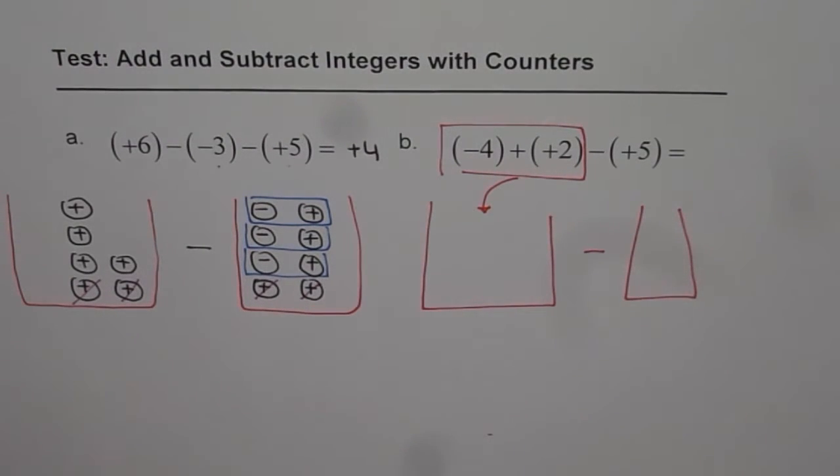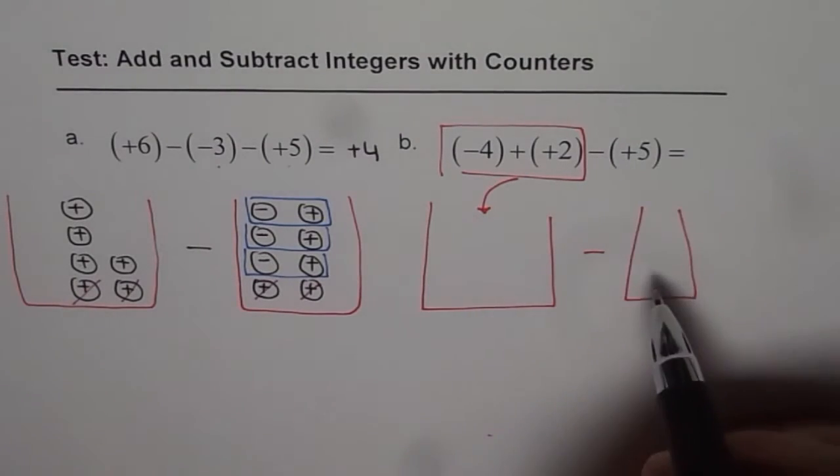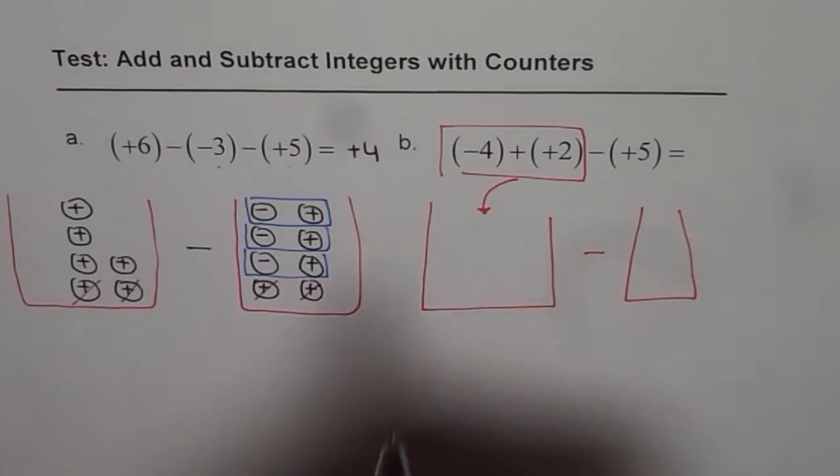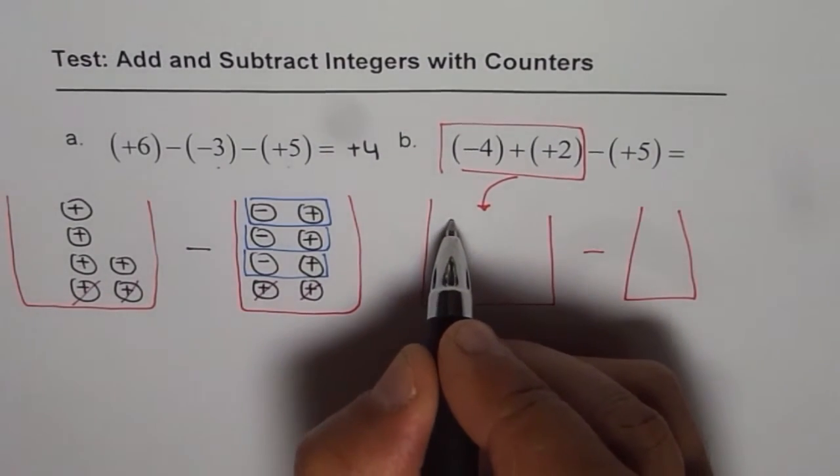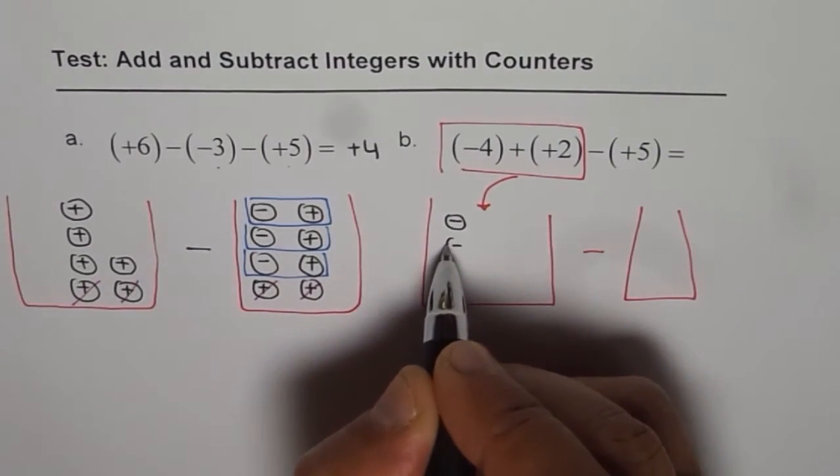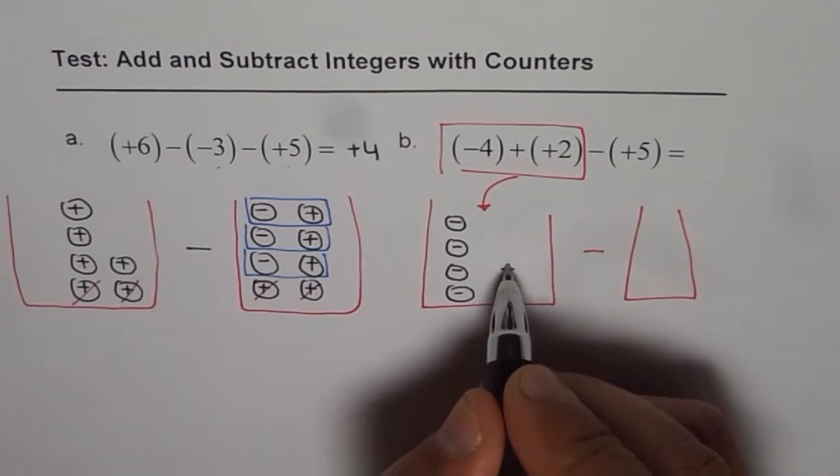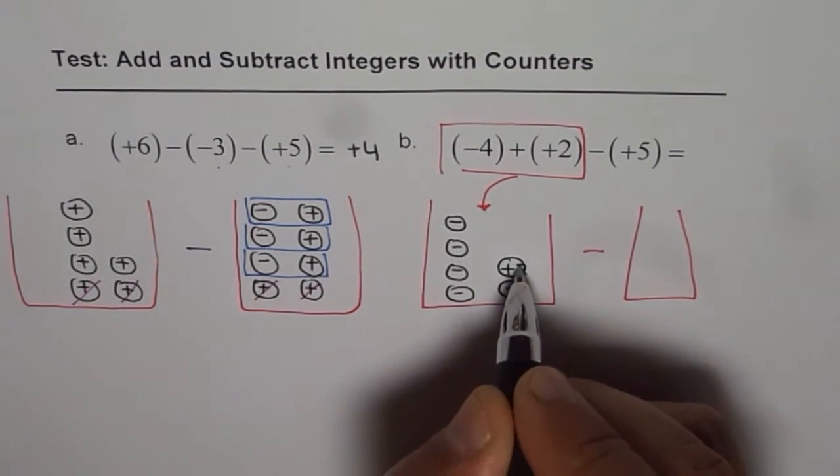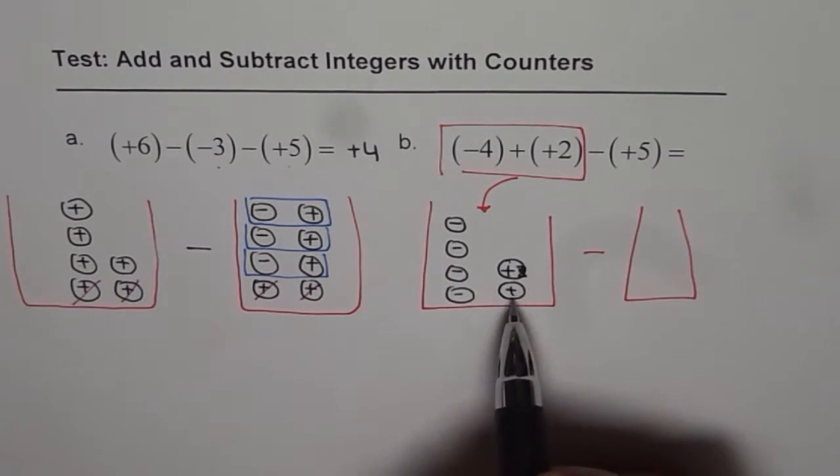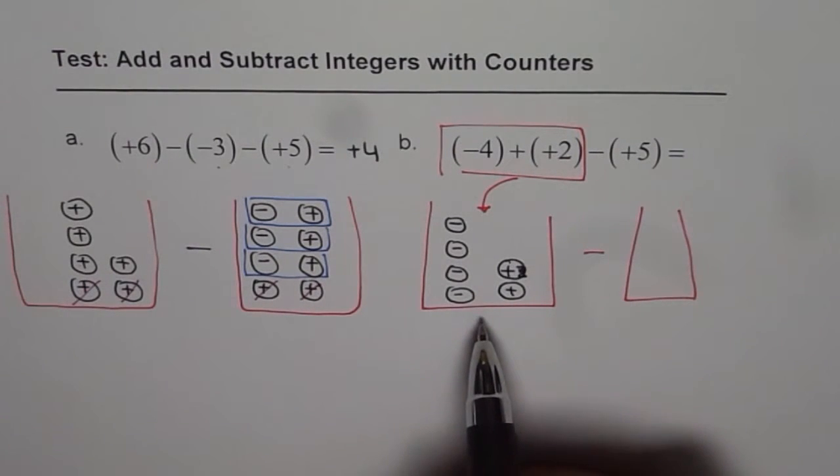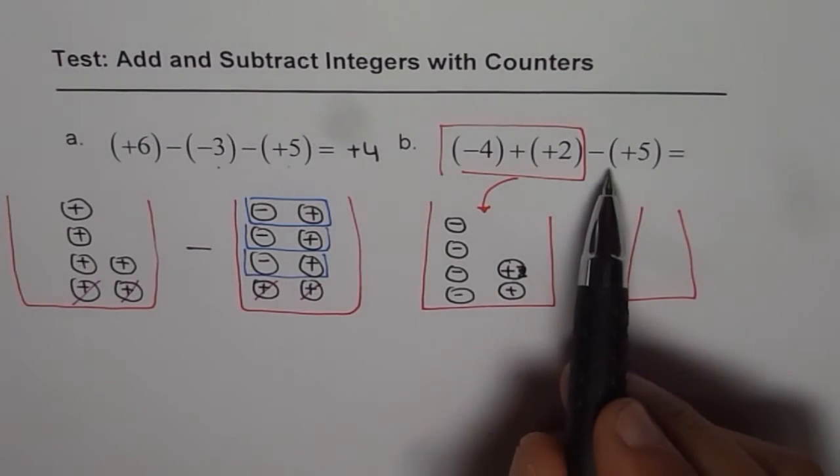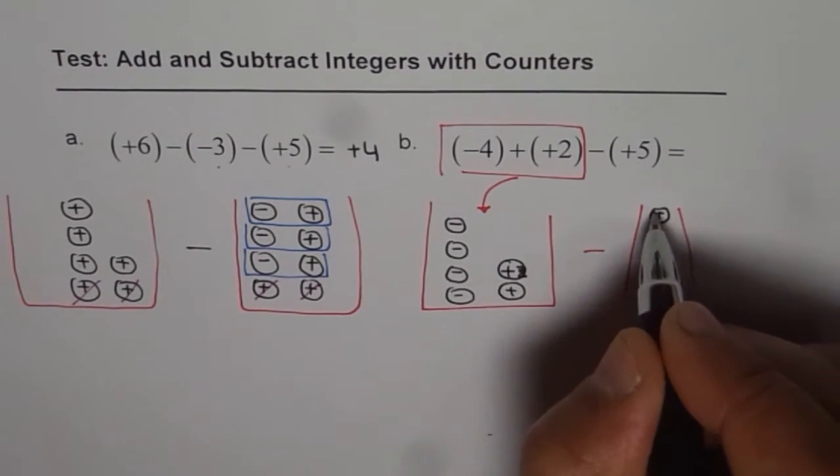And then we have to take away (+5). So that is the second container. So now let us put these counters in our first one. In the first one we have (-4) and (+2). I mean (+1) and (+1), okay?